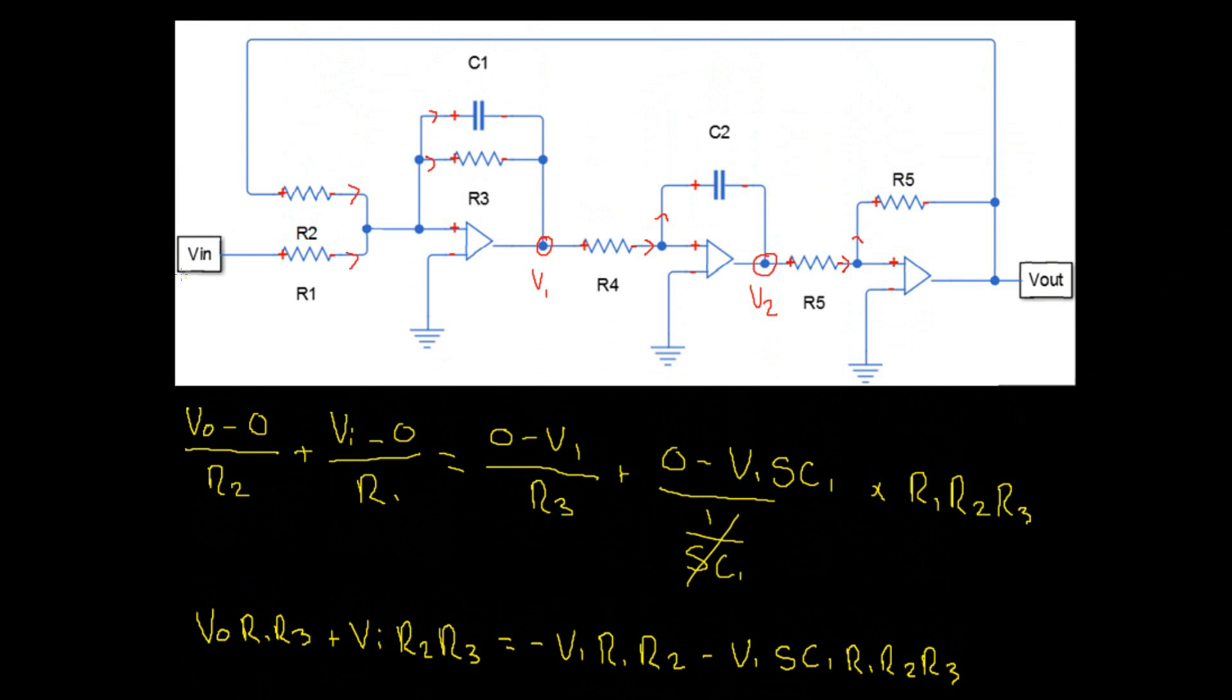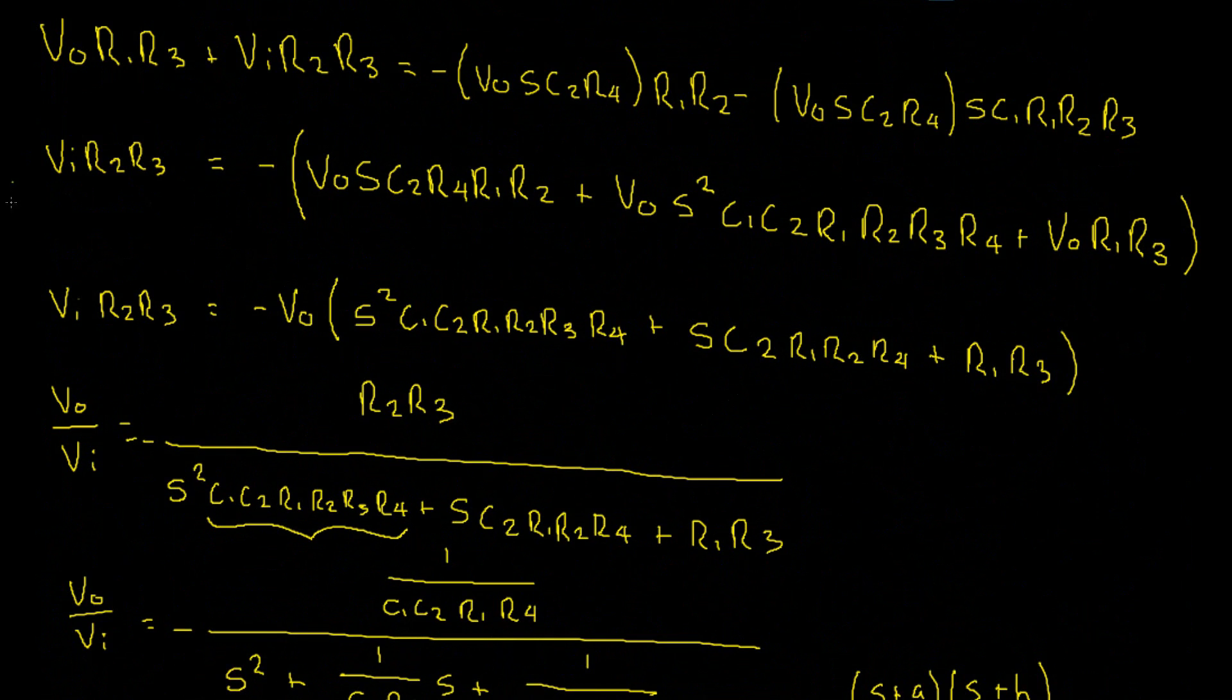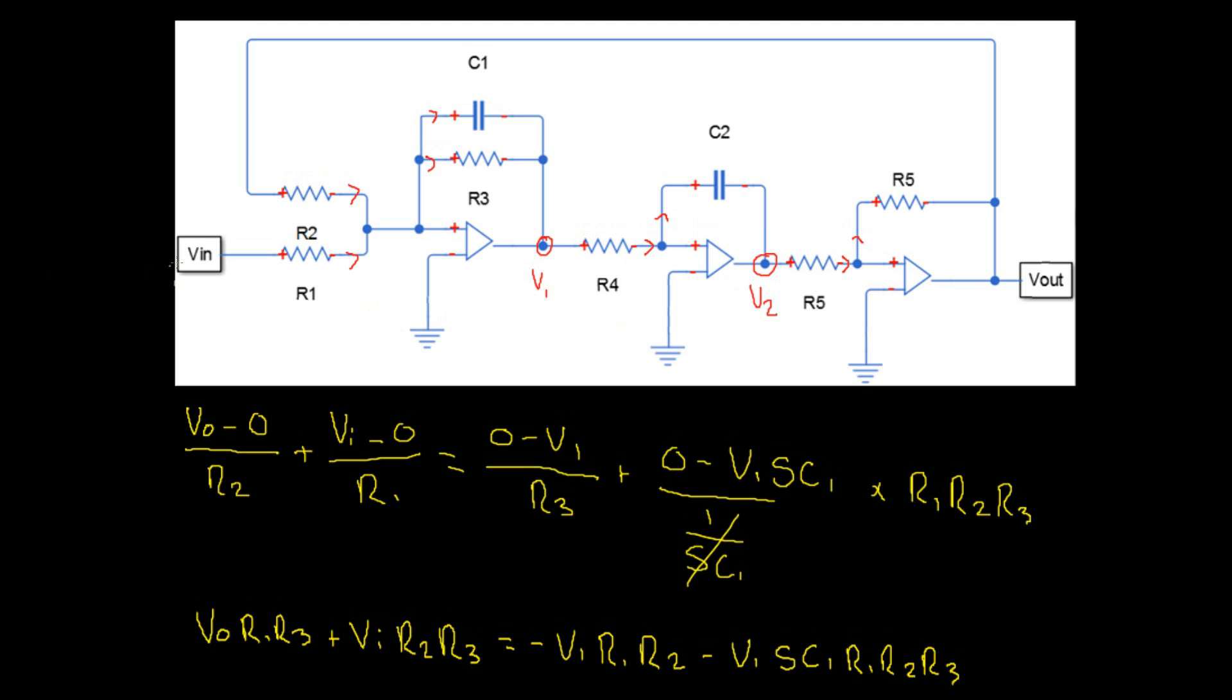So, if we took V2 divided by V in, we would have that same transfer function without the inverting. Likewise, we can take from V1 or add other small op-amp circuits around this to get either a notch filter or a band pass. Really, the things that you can do with the bi-quad circuit are limitless.